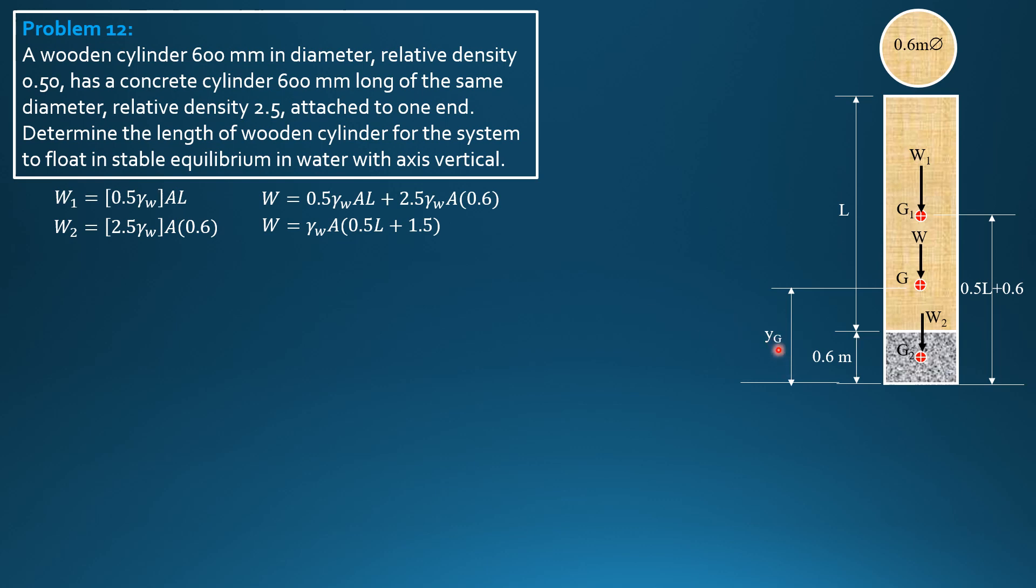Let's call this YG and solve for YG by Varignon's theorem. Weight equals buoyant force. Let's solve for the draft first. Total weight equals buoyant force, and the buoyant force is specific weight of water times area times the draft. Cancel out gamma of water times area, so the draft is 0.5 L plus 1.5. GbO therefore can now be solved, YG minus draft over 2.